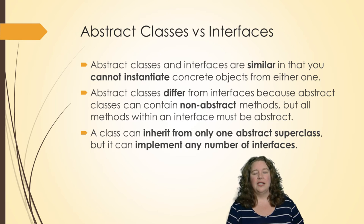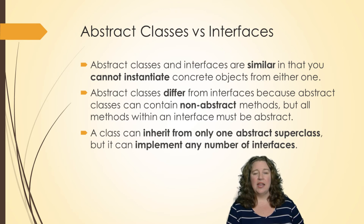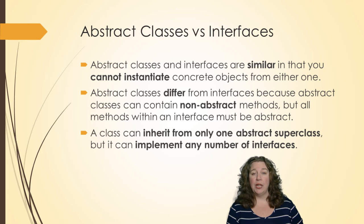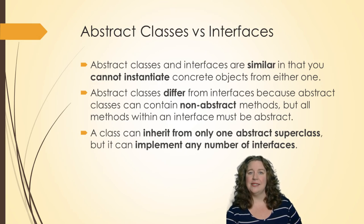Another thing to remember: classes can only inherit one superclass using extends, but a class can implement any number of interfaces. You can have multiple interfaces for a single subclass and that's fine — you can only have one superclass. So if you have an abstract class as the parent, you can only have one, whereas you can have multiple interfaces and implement all of them. Hopefully that explains the difference between abstract classes and interfaces.